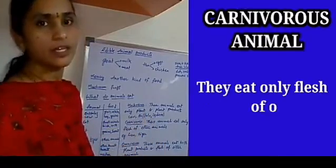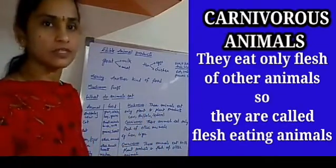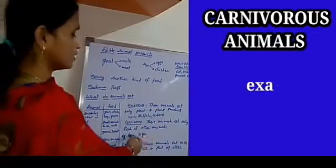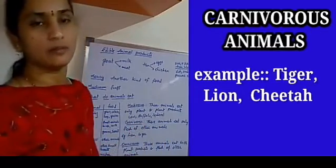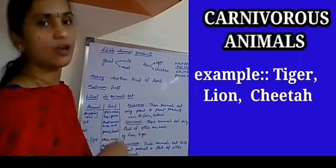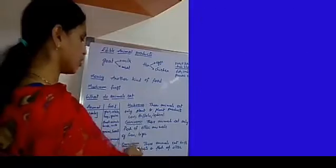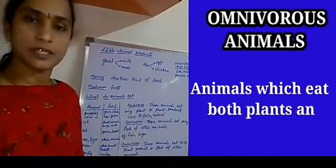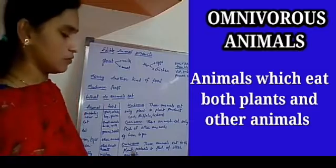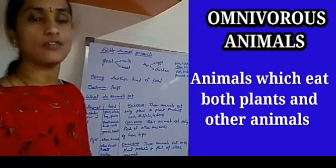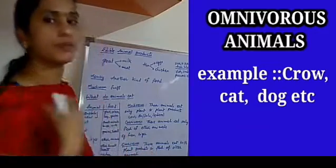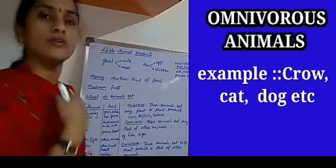Carnivores eat only the flesh of other animals — they are called flesh-eating animals. Lion and tiger are examples. Omnivores eat both plant products and also the flesh of other small animals. Examples: crow, cat, dog, etc. This is about the food lesson.